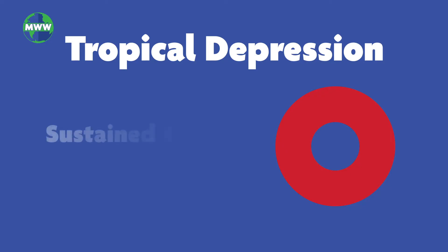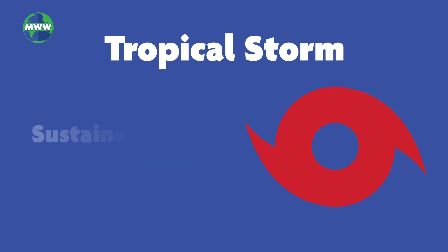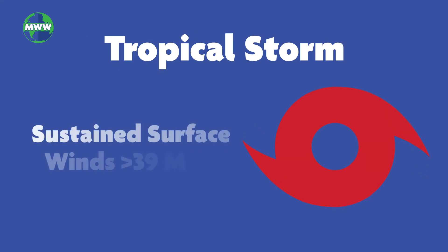If a tropical cyclone has sustained surface winds less than 39 miles per hour, they are called tropical depressions. If the sustained winds exceed 39 miles per hour, they are called tropical storms.